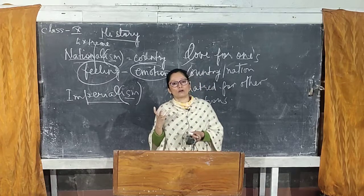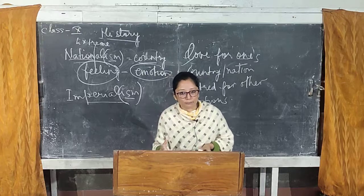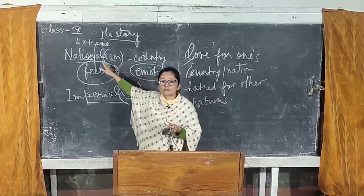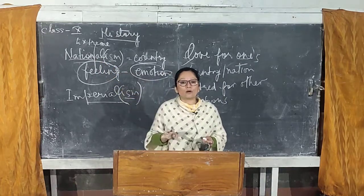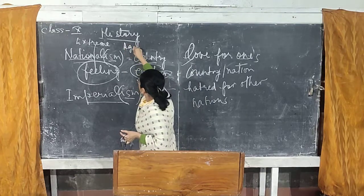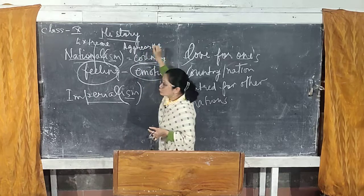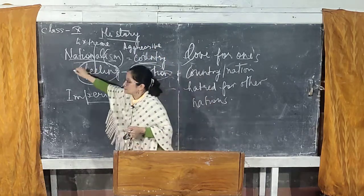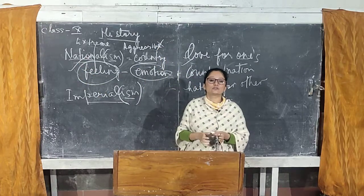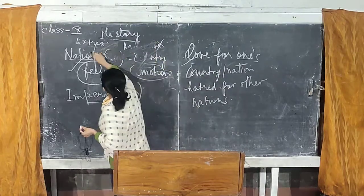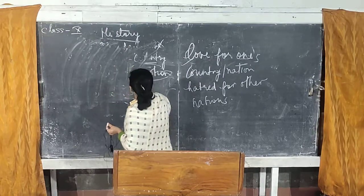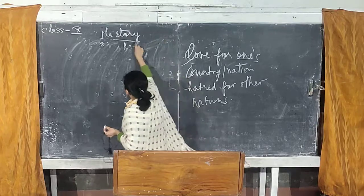So please understand the first cause. The first cause is nationalism — it refers to a nation, it's a feeling, an emotion. But what was its effect? It turned into extreme or aggressive nationalism. Nationalism is very good, but aggressive nationalism is not good at all. Now we will go to another concept, another theory — the theory of imperialism.